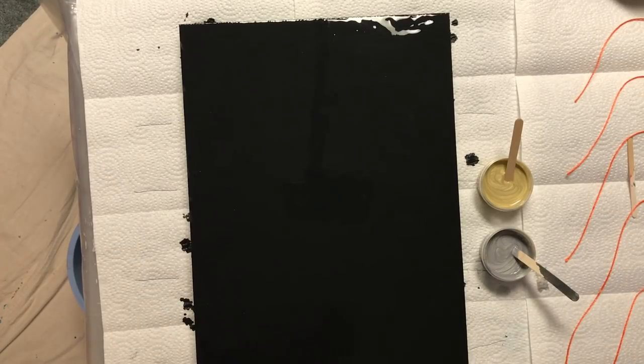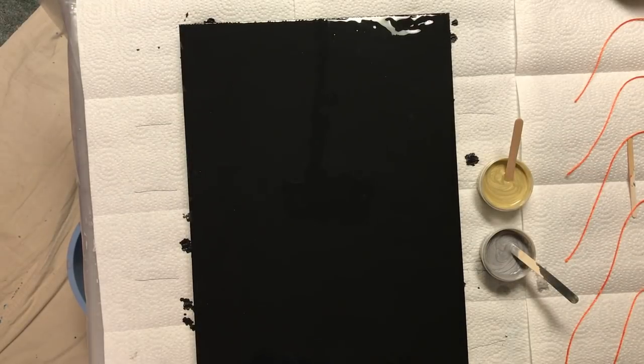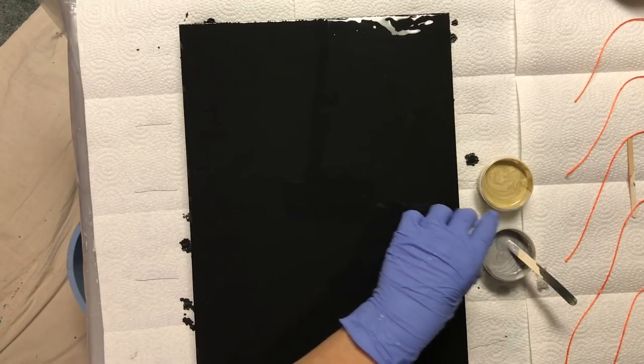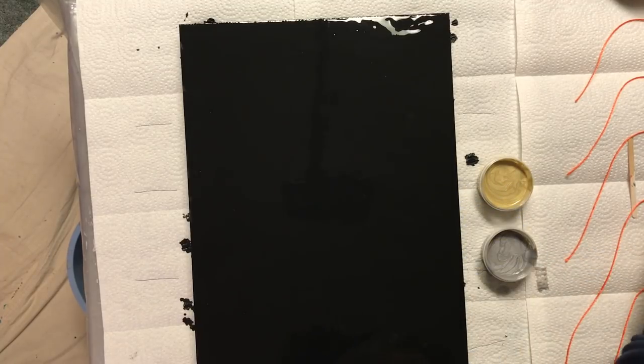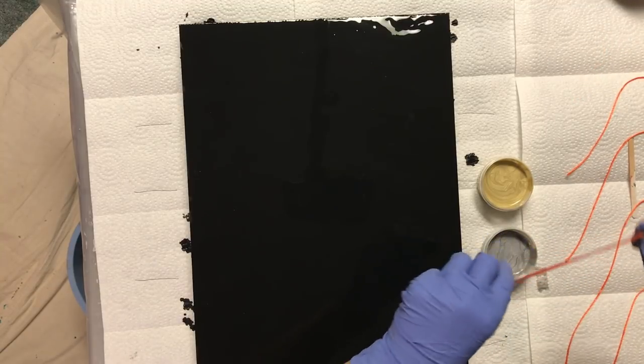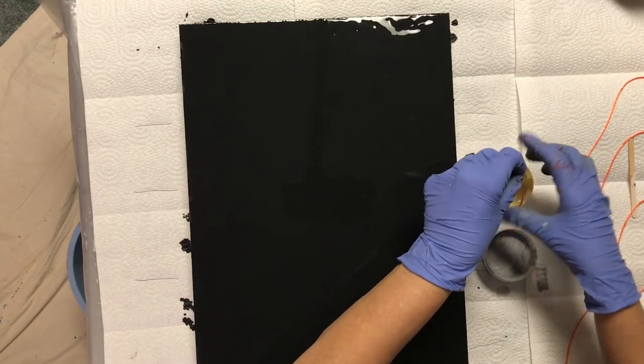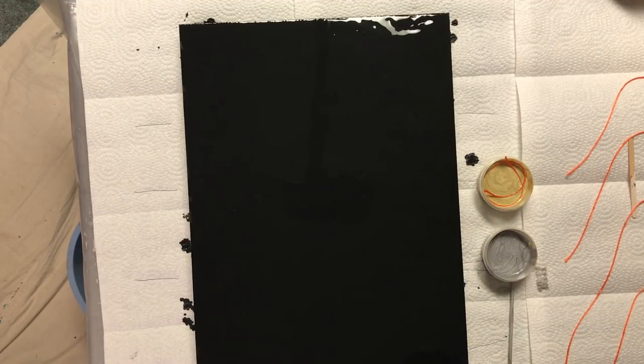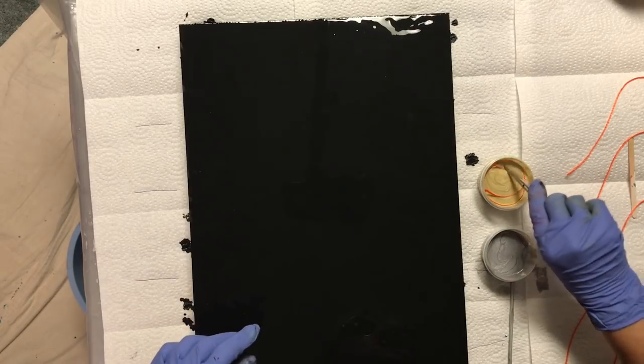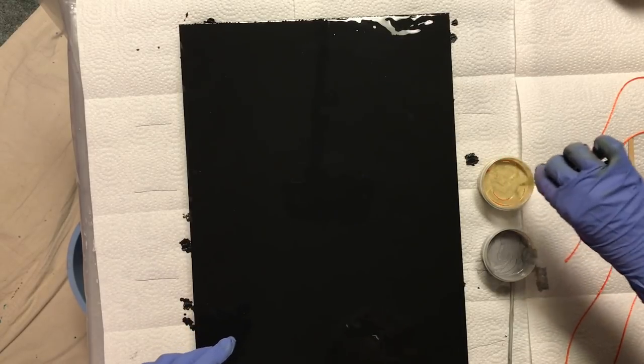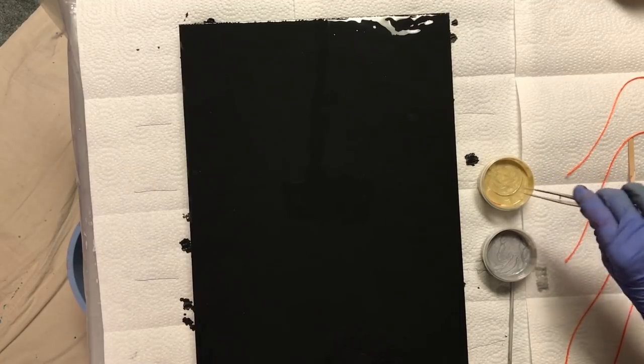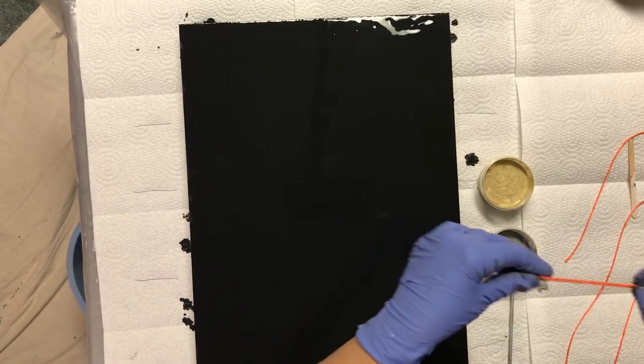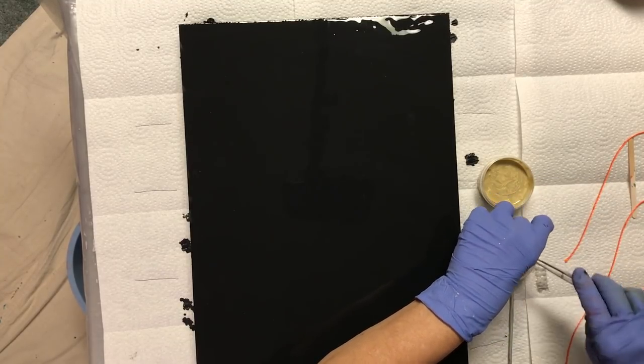So I'm going to begin. I'm just laying my string down in the paint, let it soak up a bit. I'm going to start off with gold and then go silver, and then alternate.